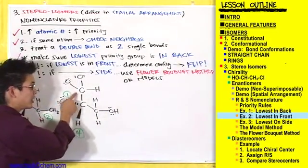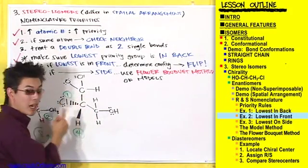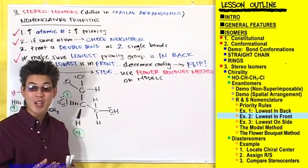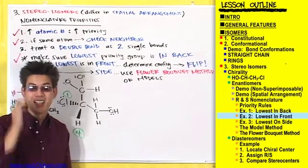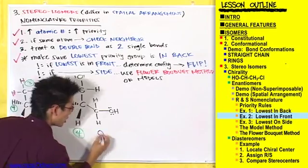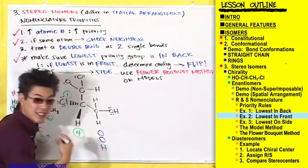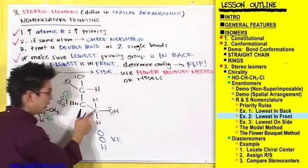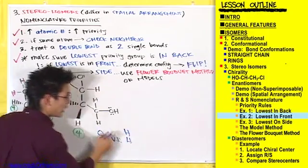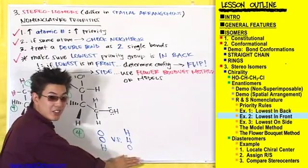If we compare these two substituents now, you'll see that this carbon's neighbors are higher in priority than this carbon's neighbors. Don't be afraid to write this out if you don't want to do it all in your head. This carbon is connected to an oxygen, another oxygen, and a hydrogen as its neighbors, versus this carbon, which has a hydrogen, a hydrogen, and an oxygen as its neighbors.